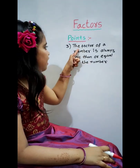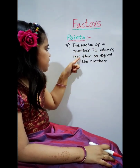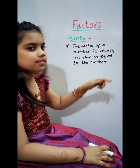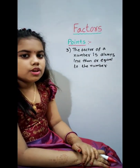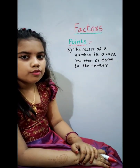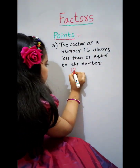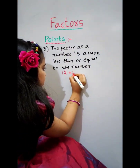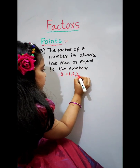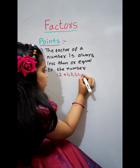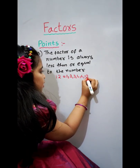Any number divided by itself equals 1. The third one is: the factor of a number is always less than or equal to the number. For example, the factors of 12 are 1, 2, 3, 4, 6 and 12.